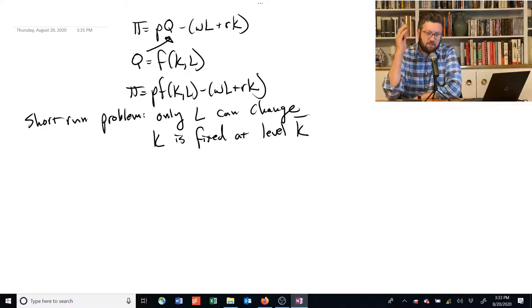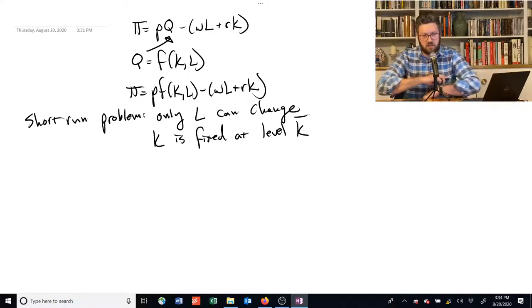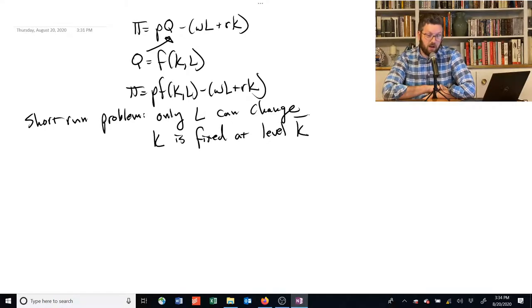So what this is saying is that this is a problem of figuring out how many waitstaff to hire today, this week, knowing what prices and wage rates are, but you can't change your kitchen. You can't change any of the machinery. Or you've got a factory, and you're trying to decide how many workers to put in it today, but you're stuck with the factory you've got. You can't buy more capital or less. That's a long-run problem because it takes longer to adjust these big, expensive machines.